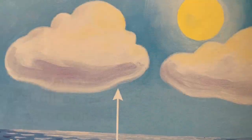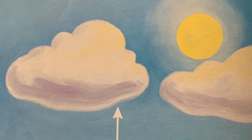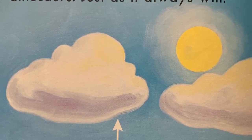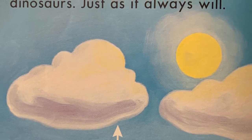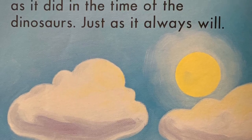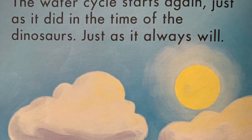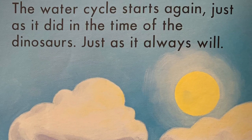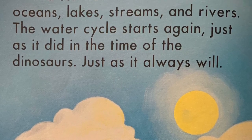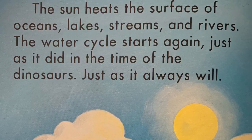The sun heats the surface of oceans, lakes, streams, and rivers. The water cycle starts again, just as it did in the time of the dinosaurs. Just as it always will.